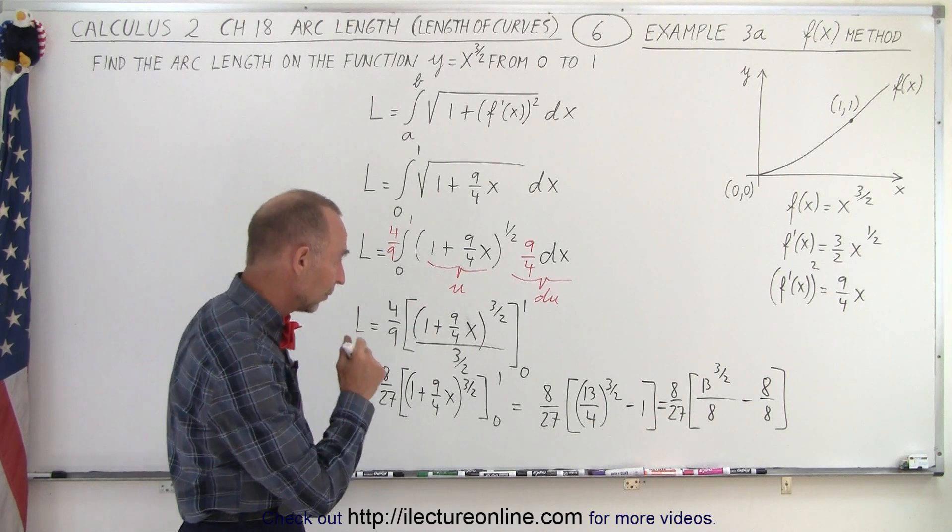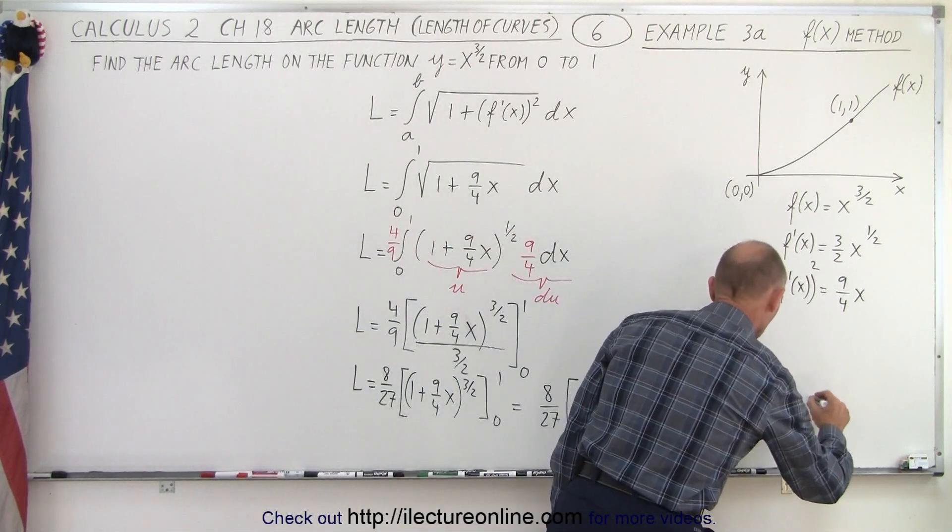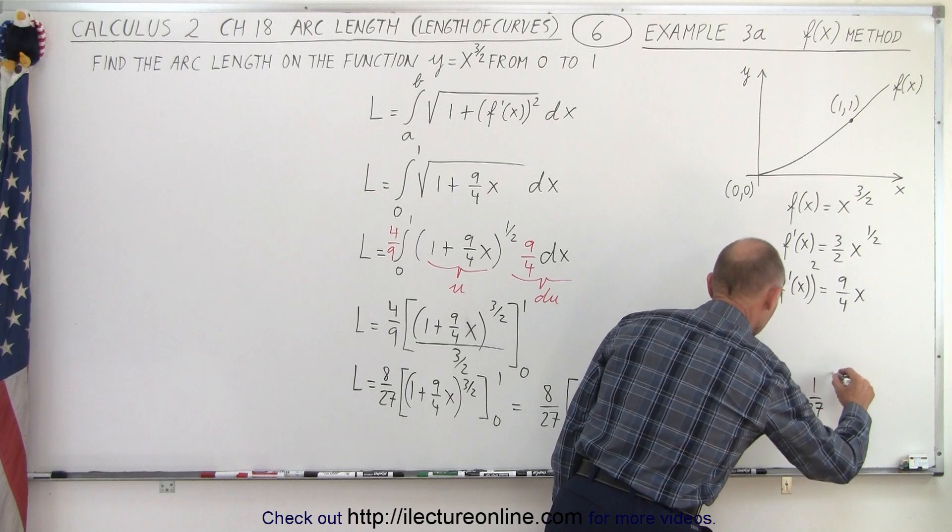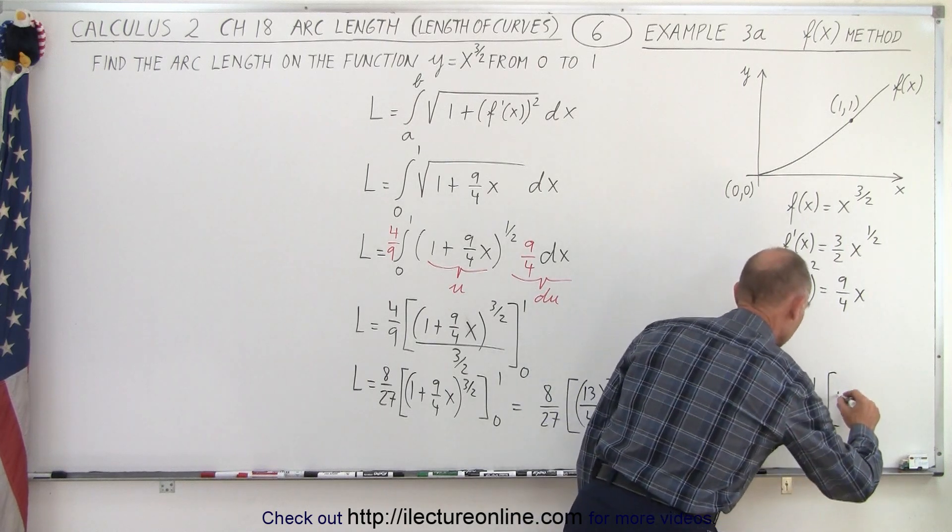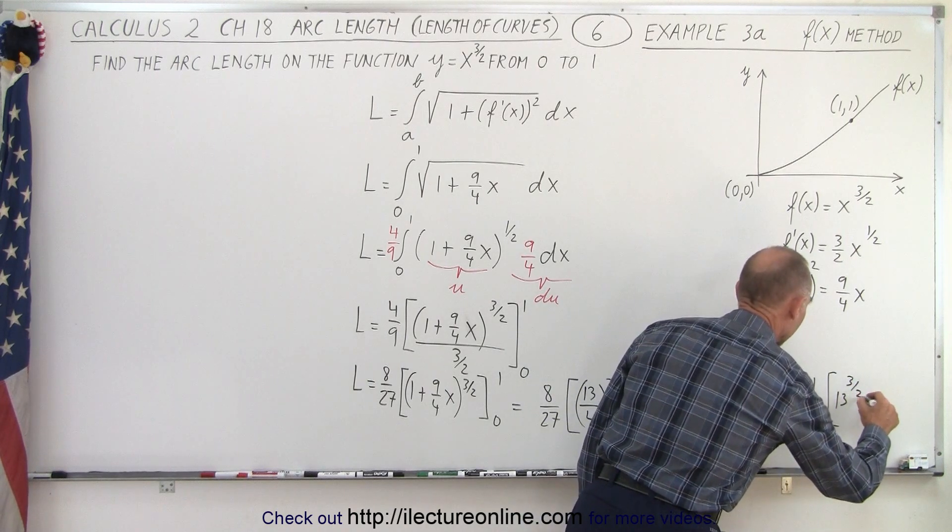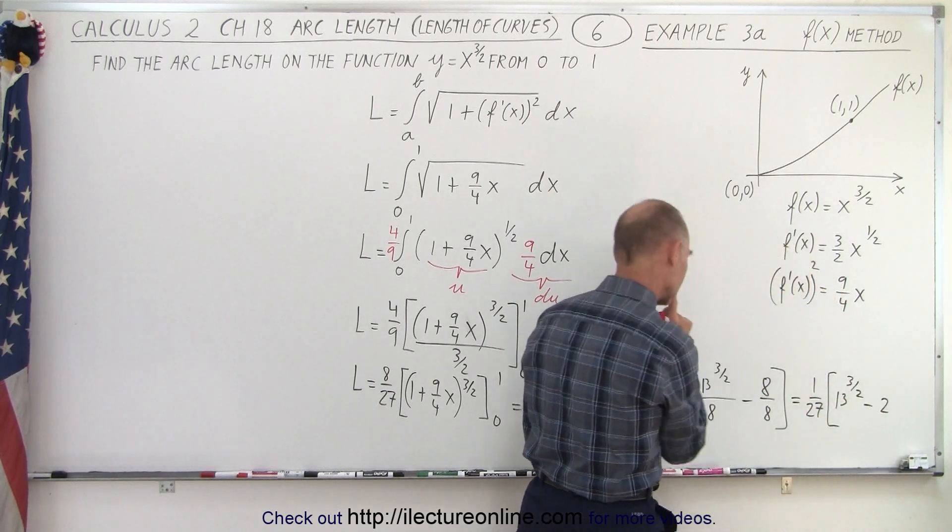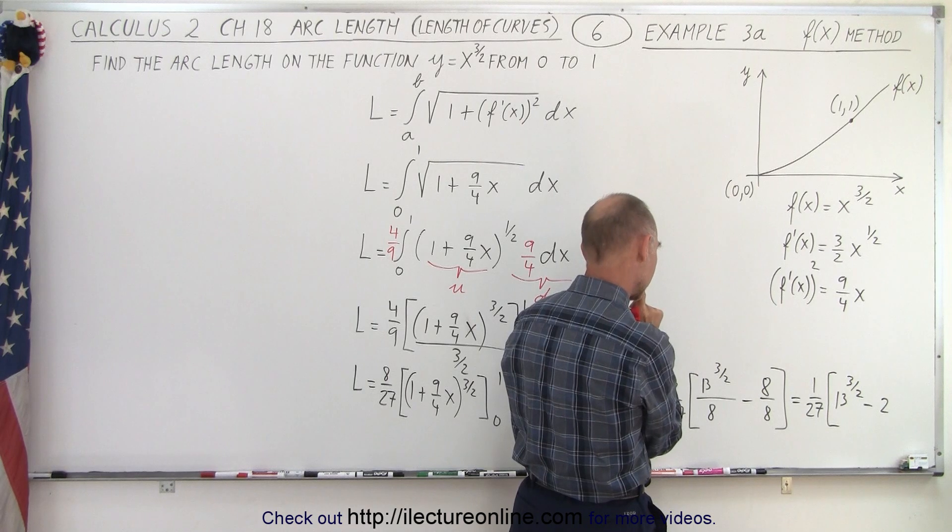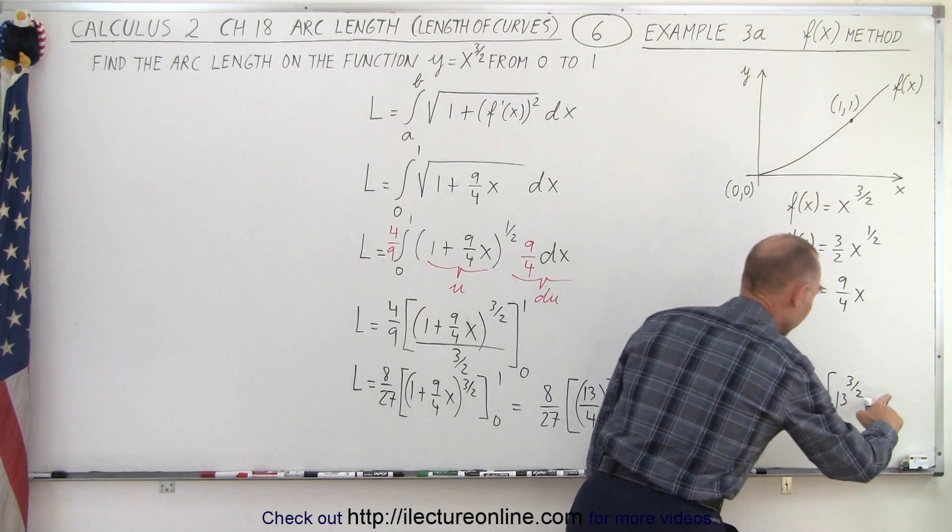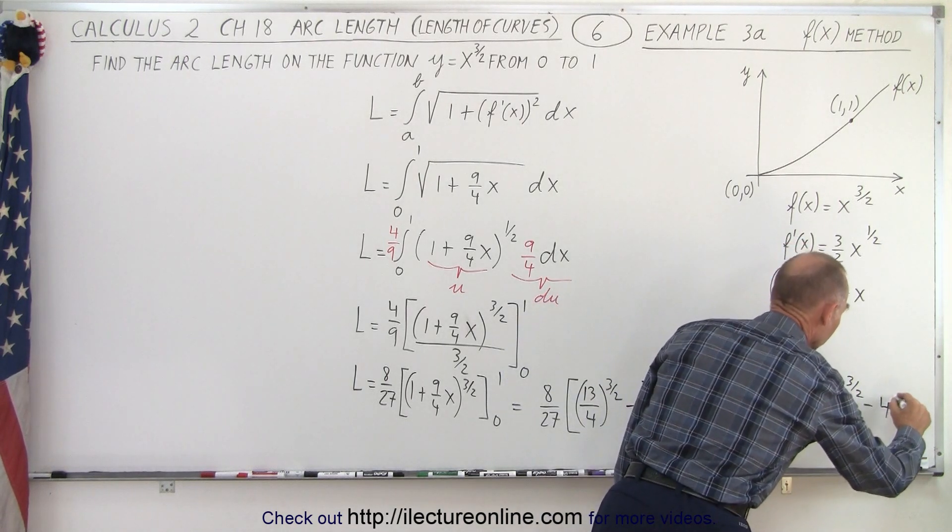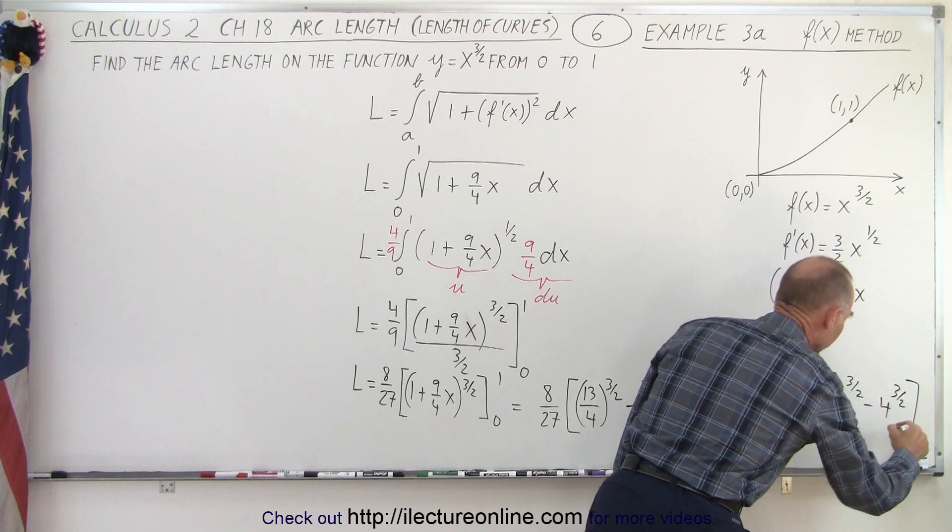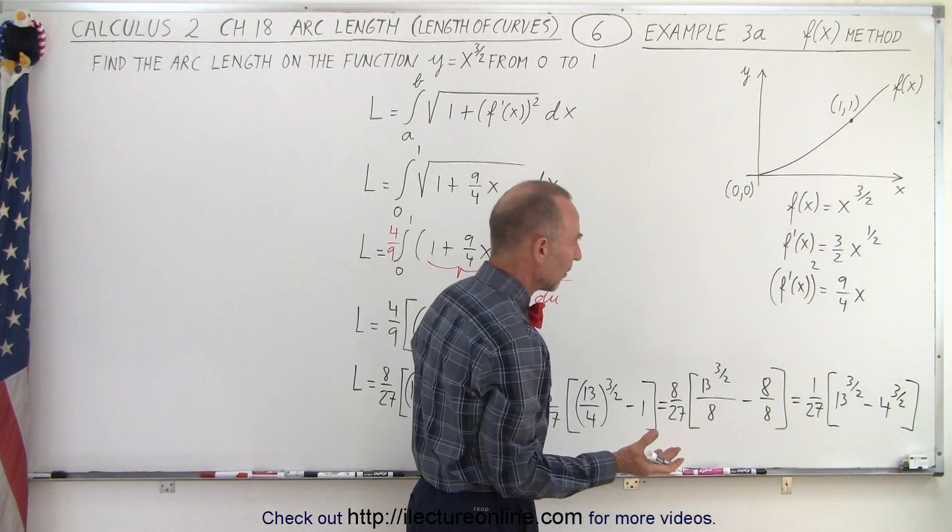So then I end up with one over 27 times 13 to the three halves minus two to the three halves. No not two to the three halves that won't work. Let's see four to the three halves yeah that will work, four to the three halves just to put in the same format and that's probably close enough.